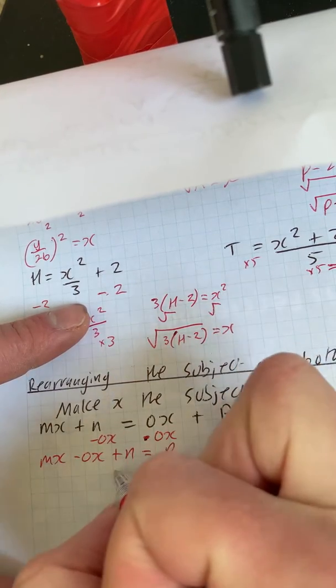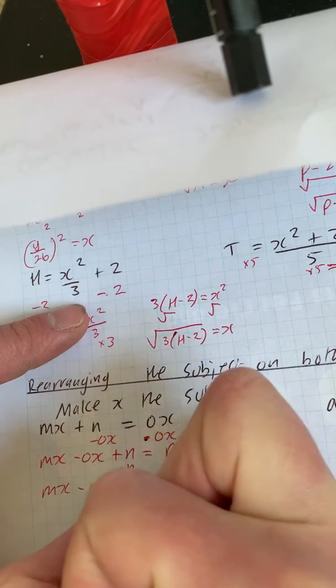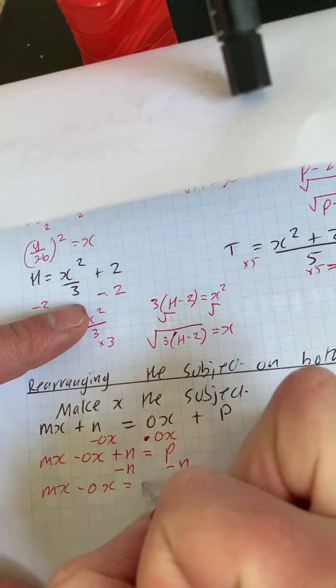Now we want x's on their own, so we need to get rid of this n. So we take away n, so I've got mx minus ox is equal to p minus n.